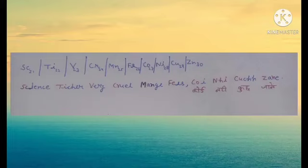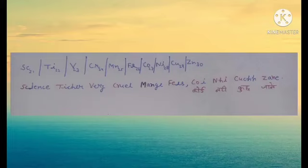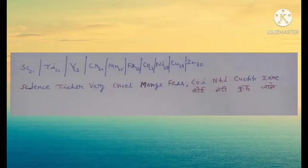Here, 'Science' symbolizes Scandium, 'Teacher' symbolizes Titanium, 'Very' for Vanadium, 'Cruel' for Chromium, 'Mange' for Manganese, 'Fees' gives the symbol for Iron (Fe), 'Koi' for Cobalt (Co), 'Nahi' for Nickel (Ni), 'Kuchh' gives Cu for Copper, and 'Jane' gives Zn for Zinc. This is a very funny and quick way to learn these elements.